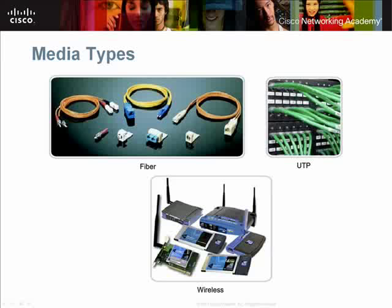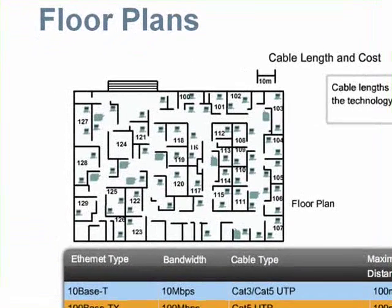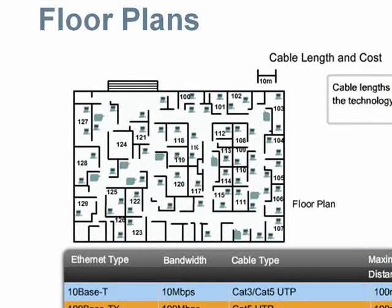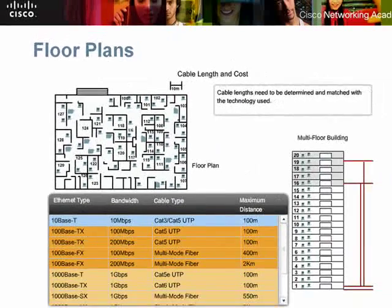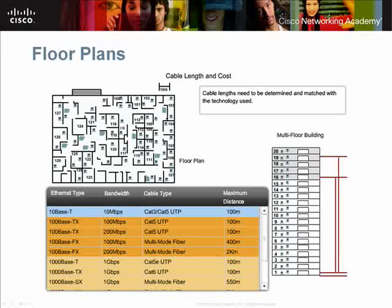When connecting devices on a network, there are three main classifications of media: copper, fiber optic, and wireless. Each type of media has advantages and disadvantages. Some of the factors you should consider are maximum cable length, cost, and bandwidth. When estimating cable lengths, networkers use floor plans or diagrams. Each cable type has a maximum cable length after which signal loss takes place. For this reason, you need to make sure you fully understand the limitations of the selected media.